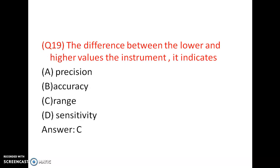Answer is B. The difference between the lower and higher values of an instrument is called the range. Range and sensitivity are opposite to each other. Range gives the maximum to minimum value span, whereas a sensitive instrument can detect even a very small input. If the instrument can measure from a small value to a very large value, it has a higher range; if it can measure very small values, it is called lower range. Answer is C.